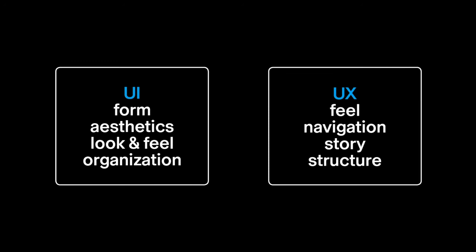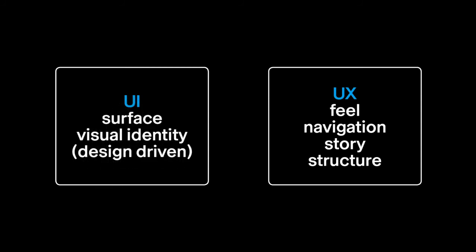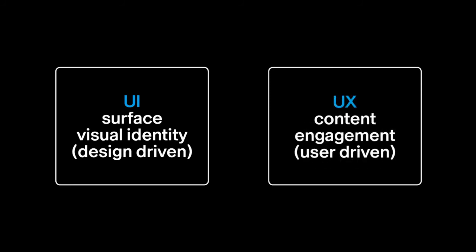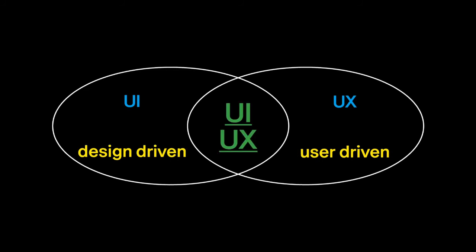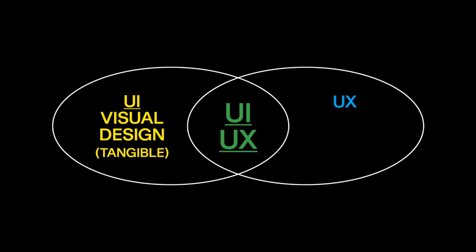With UX, we're going to look much more at the intangible aspects of interface design — how things feel, how our navigation works, what our story and structure is. UI ends up being a little bit more about the surface; it's design driven. UX tends to work more with thinking about the user's engagement; it tends to be more driven around the activity of interaction. And while we'll separate UX from UI as a way to get a little bit of focus, it's never truly separated — they're intrinsically informing each other.